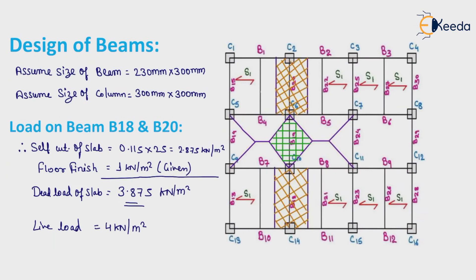Step number one for design of beam is loads on beams V18 and V20. We will calculate loads on beams V18 and V20. We are assuming size of beam equals to 230 mm × 300 mm. Assume size of column equals to 300 mm × 300 mm. The 230 mm size of beam is the same as the external wall thickness given in the question — this hints that generally beam size is the same as external wall thickness.